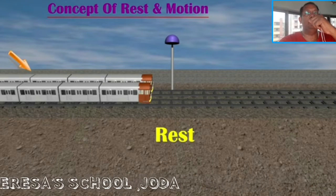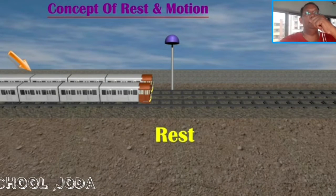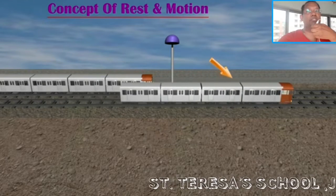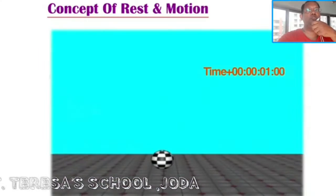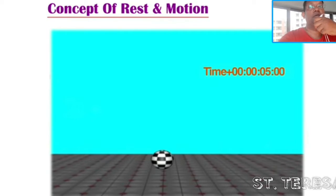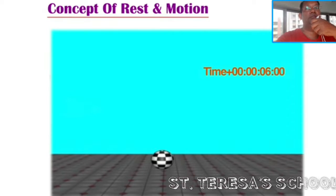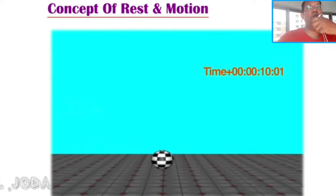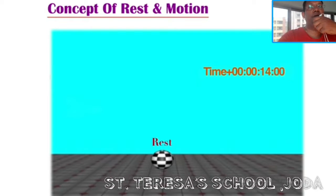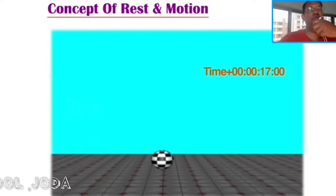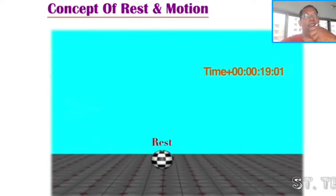Now what is rest and what is motion? When can we say an object to be at rest and when can we say an object to be in motion? An object is said to be at rest if its position does not change with respect to its surroundings with time. As you can see, the ball is at rest because there is no change in its position with respect to its surroundings with time.